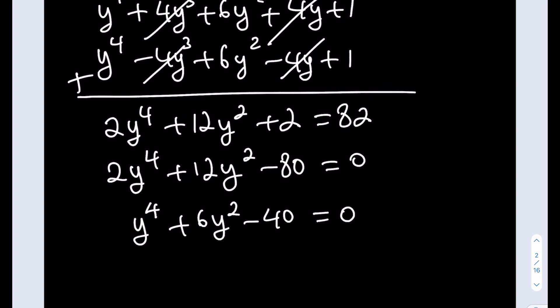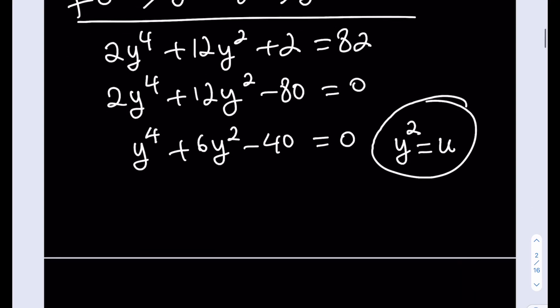This is a biquadratic equation. Yes, it's quartic, but look, there's no y cubed, there's no y. So I can go ahead and do the usual substitution. And I really like the u substitution, not just for integrals, right? So I'm going to call y squared equals u. Then u will see what happens. u squared plus 6u minus 40 is equal to 0.